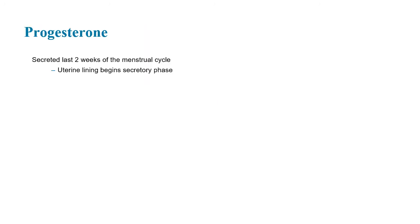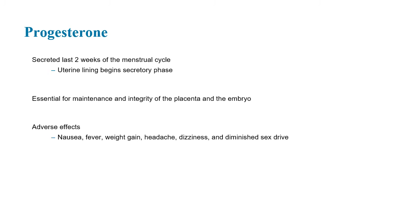Progesterone is secreted in the last two weeks of the menstrual cycle. This is where the uterine lining begins the secretory phase and menstruation begins. It is essential for maintenance and integrity of the placenta and embryo. The adverse side effects include nausea, fever, weight gain, headaches, dizziness, and diminished sex drive. Hormonal birth control also contains progesterone, so it has these side effects as well.